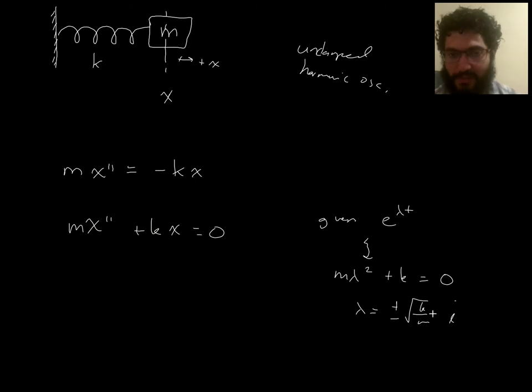Then you get lambda equals square root minus k over m, that means plus minus square root k over m times i. Since k and m are always positive, square root of negative k over m would be complex. Since you get complex roots, you get basically pure oscillation, so there's no exponential growth or decay part. You get pure oscillation with this frequency. And we call this the natural frequency of the system.